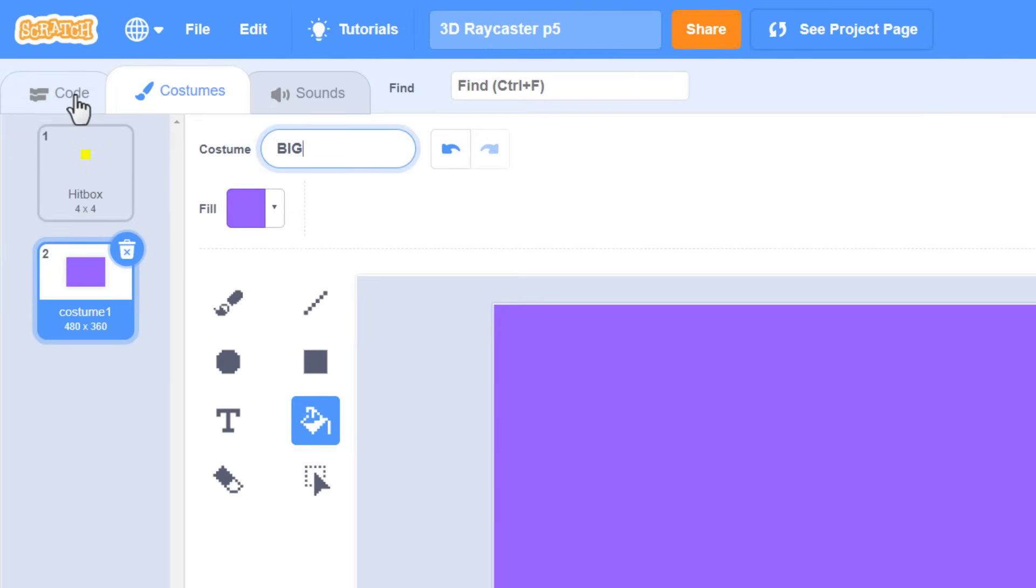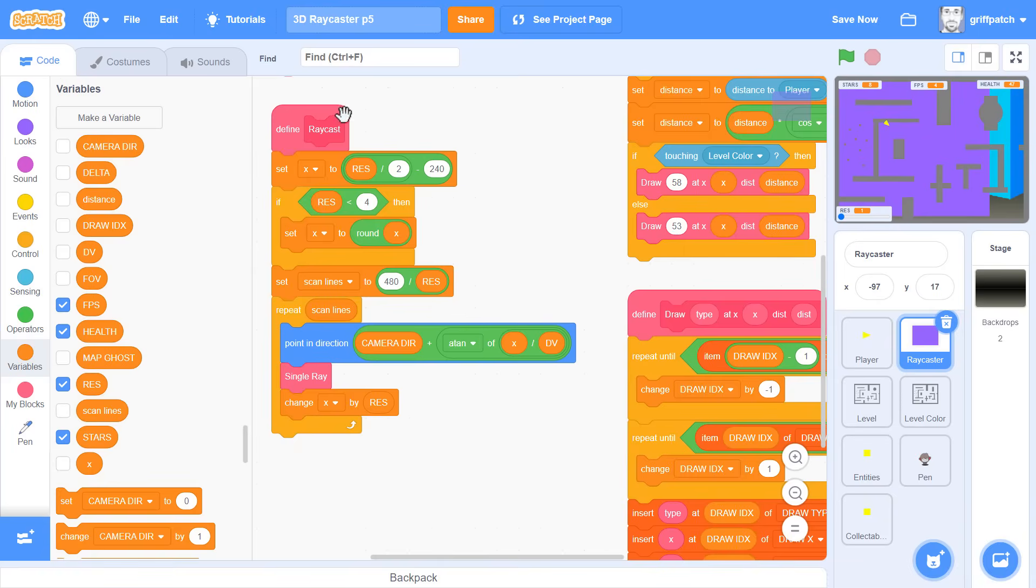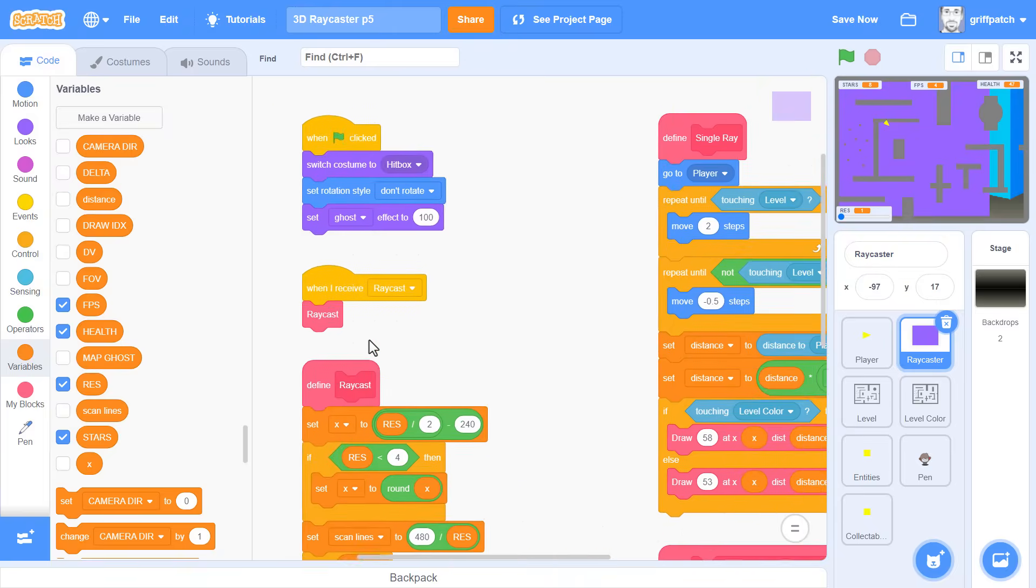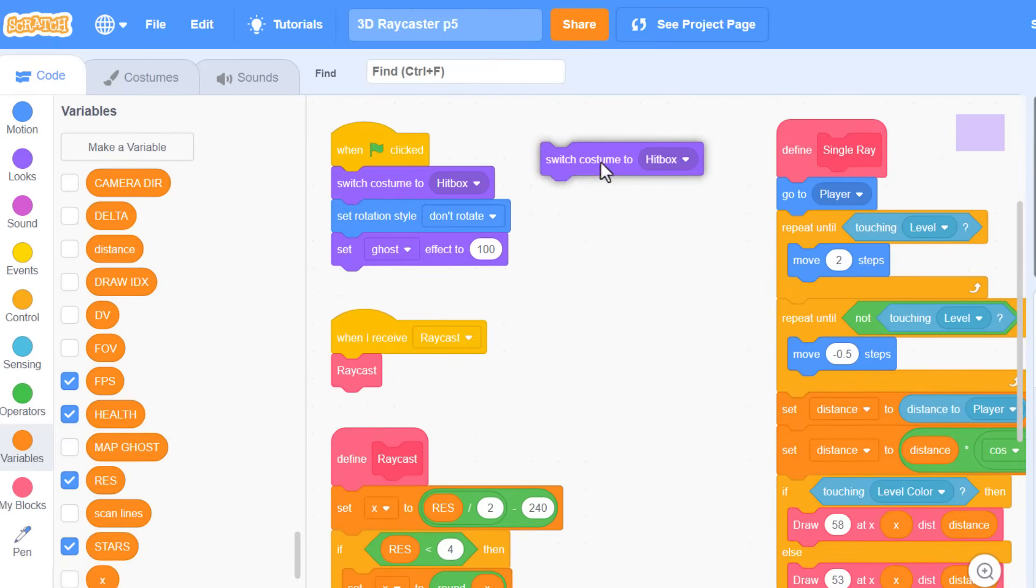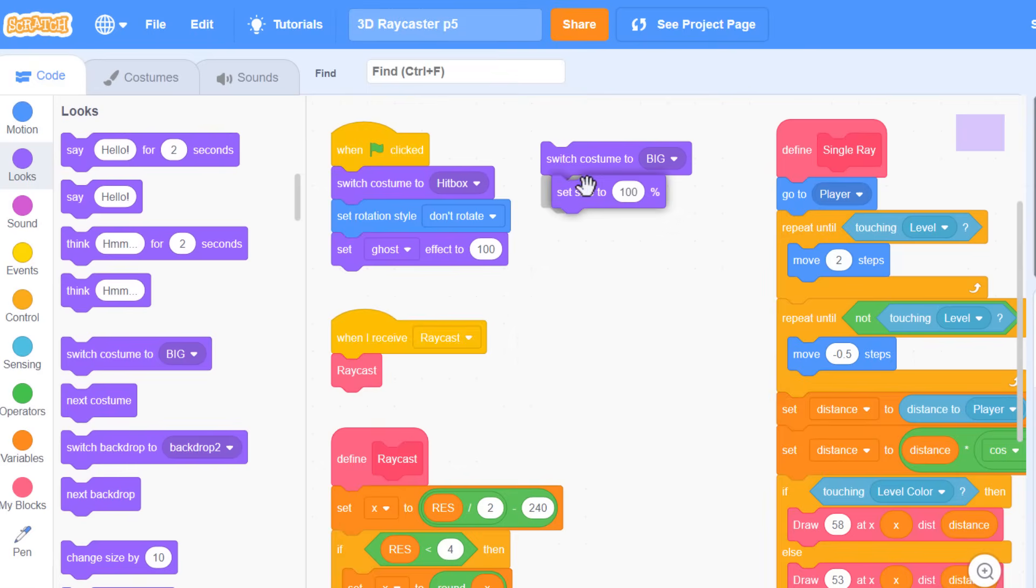Now, in the code tab, when the flag is clicked, we need a new switch to costume block. Switching to the new big costume. Doing this will let us set the size of the sprite to 1%. That's really small.